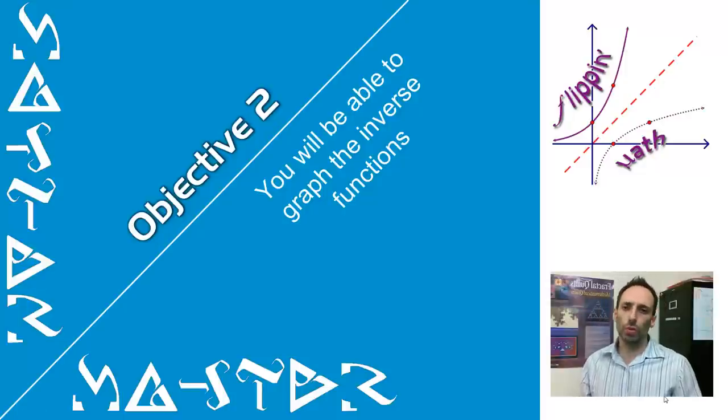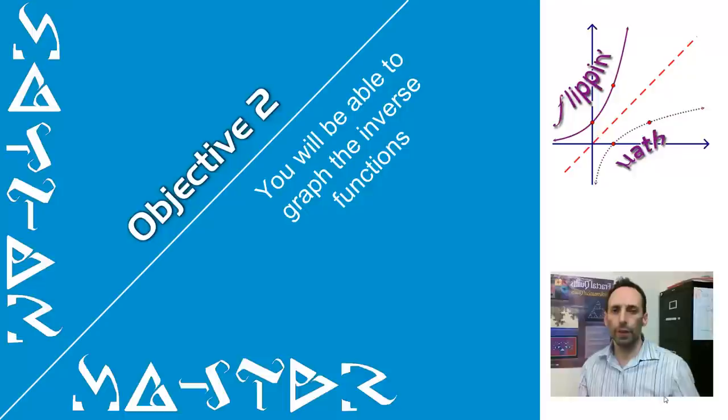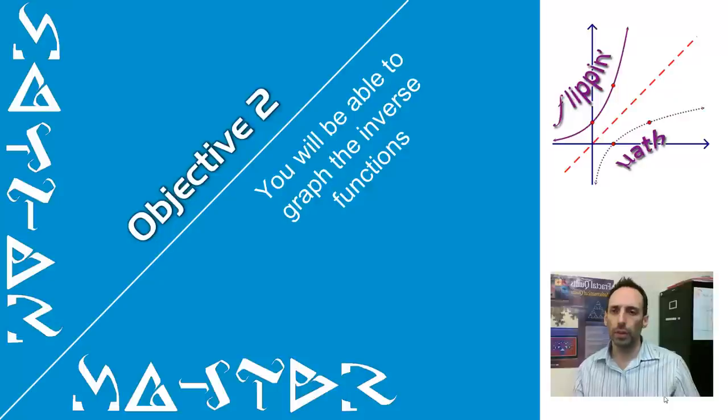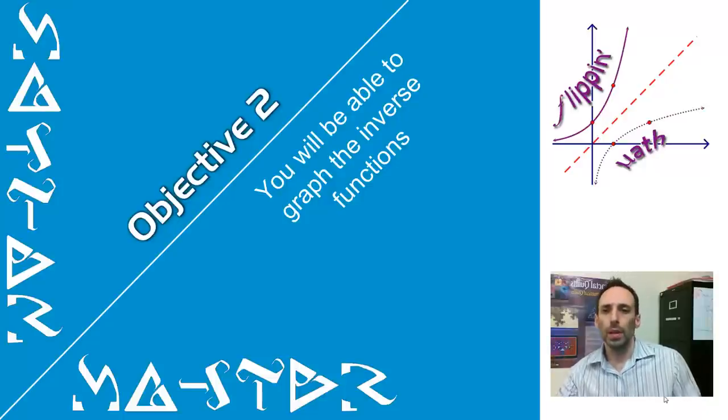All right, in this video we're talking about being able to graph inverse functions. And in this image here, this image is what is called an ambigram. If you have read Angels and Demons by that one guy, I'll put it up here whenever I edit this video, I can't remember his name, Dan Brown. Same guy who wrote Da Vinci Code. Anyway, that or the movie, there's lots of ambigrams in it.